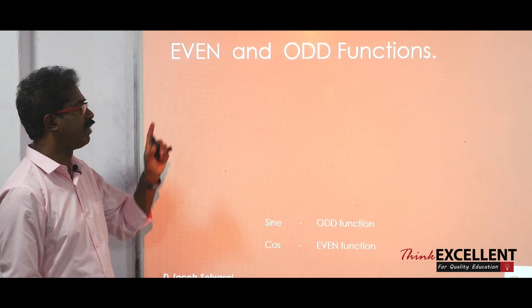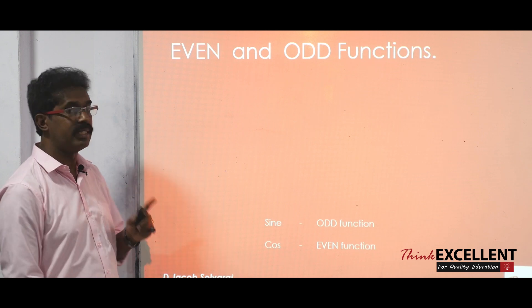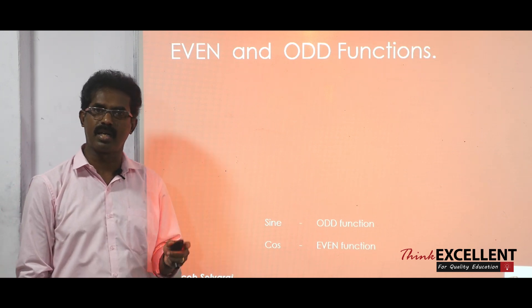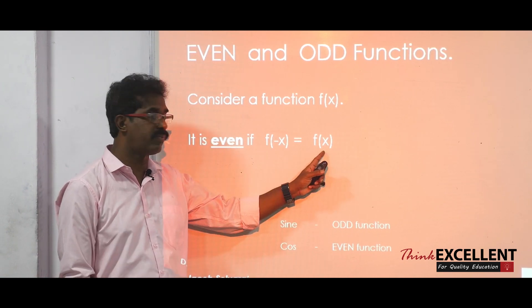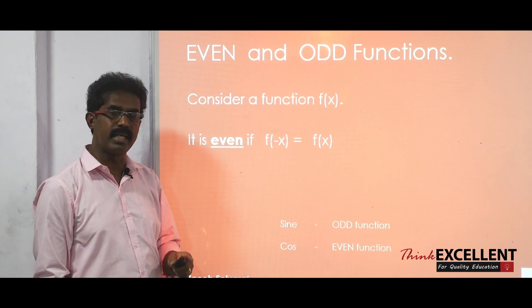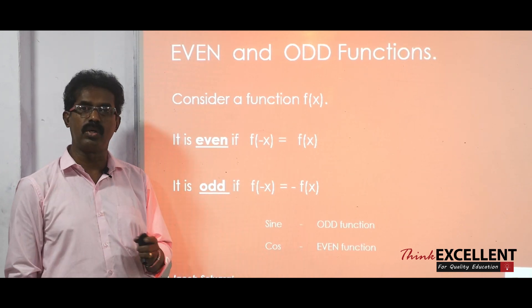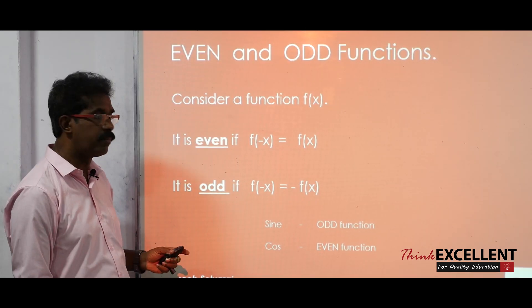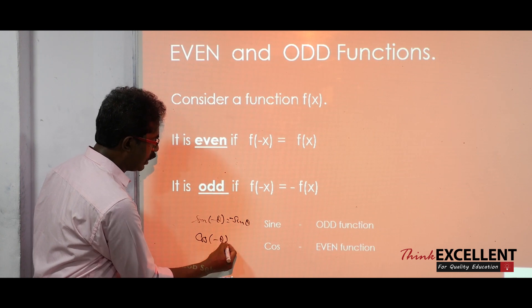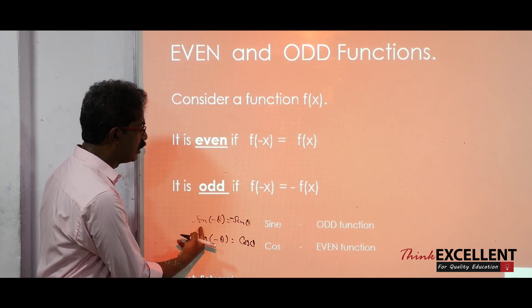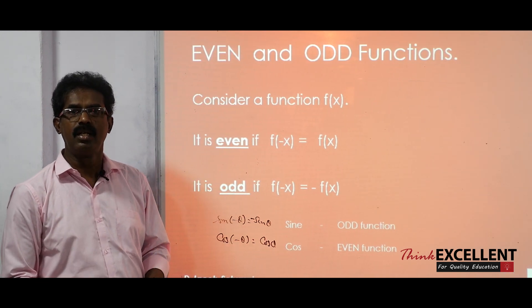Even function and odd function — it's a very simple thing. To check whether the function is odd or even, you find f(−x). If f(−x) = f(x), we say the function is even. If f(−x) = −f(x), then we say the function is odd. In trigonometry: sine(−θ) = −sine(θ), so sine is an odd function. cos(−θ) = cos(θ), so cosine is an even function. Using that you can determine all other trigonometric functions. So subscribe to our channel to view upcoming videos.